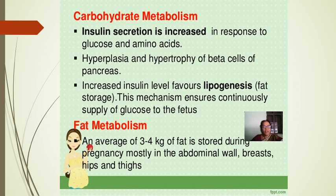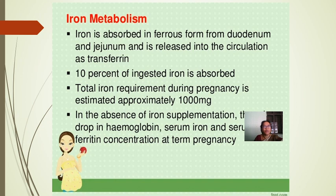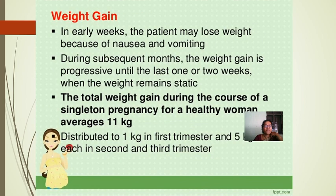Fat metabolism: an average of 3–4 kg of fat is stored during pregnancy, mostly in the abdominal wall, breasts, hips, and thighs. Iron metabolism: iron is absorbed in ferrous form from the duodenum and jejunum and released into circulation; about 10% of ingested iron is absorbed. Total iron requirement during pregnancy is estimated at approximately 1000 mg. In the absence of iron supplementation there is a drop in hemoglobin, serum iron, and serum ferritin concentration at term.